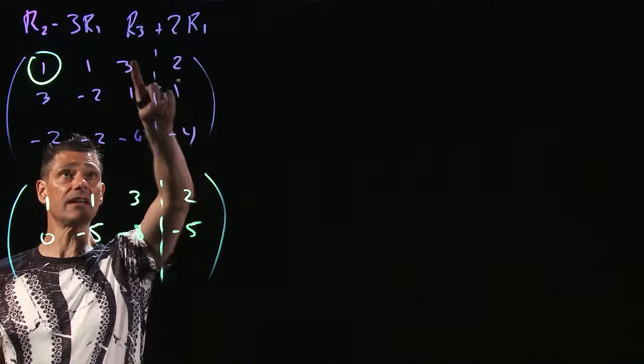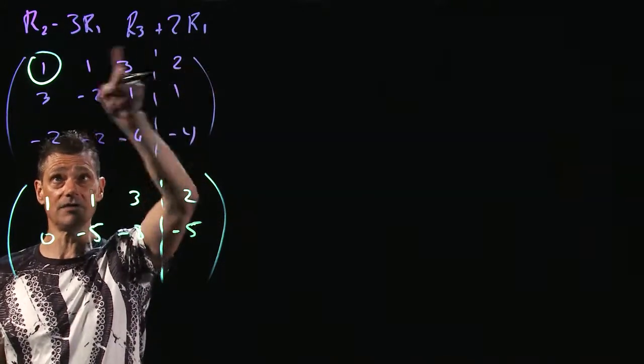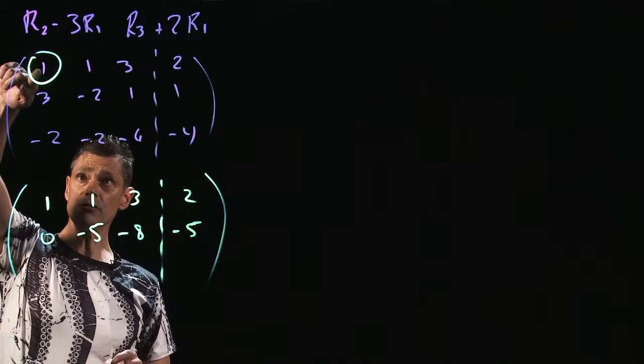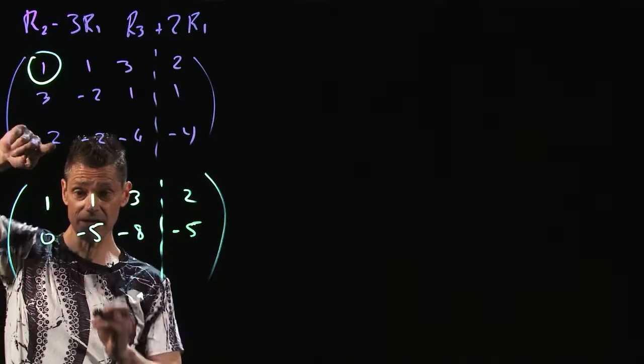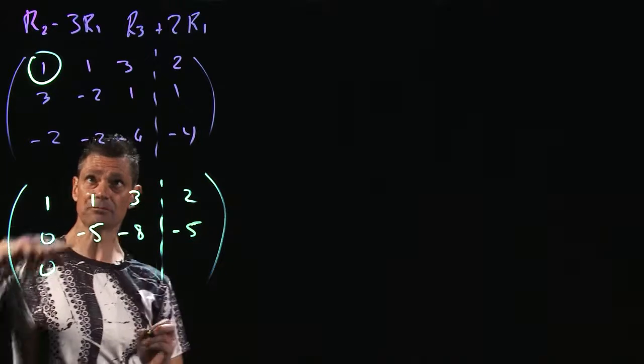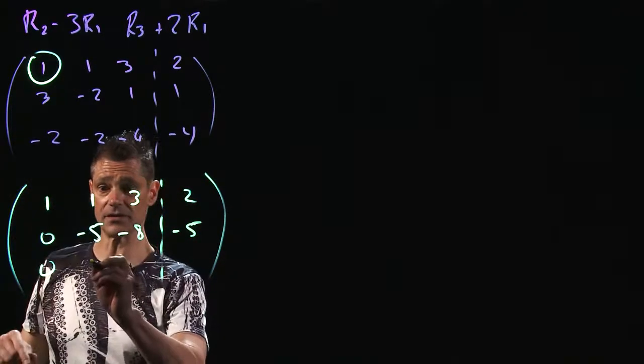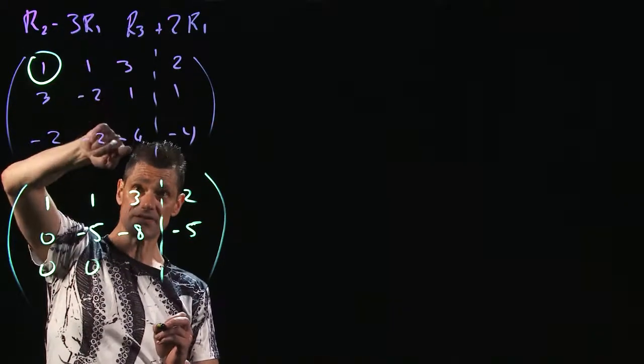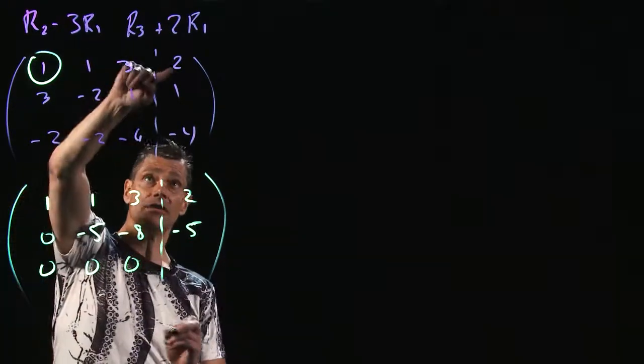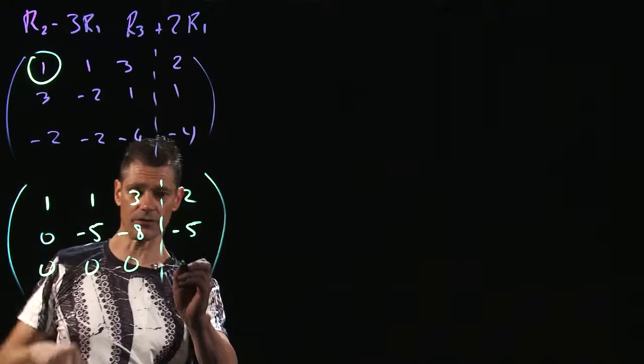Now I'm going to take and add 2 times row 1 to row 3. So 2 times 1 plus -2 is 0, which is what I wanted to do. 2 times 1 is 2 plus -2 is 0. 2 times 3 plus -6 is 0. 2 times 2 is 4 plus -4 is 0. Whoa!